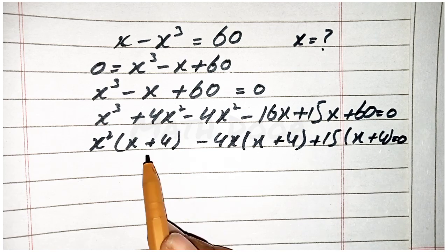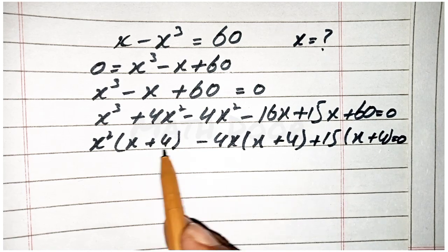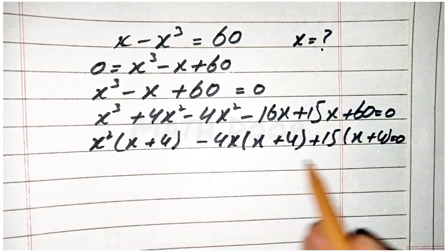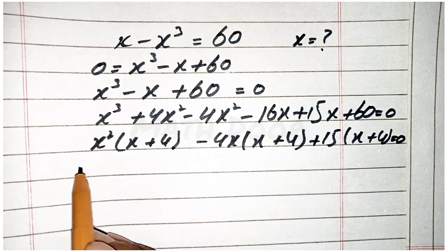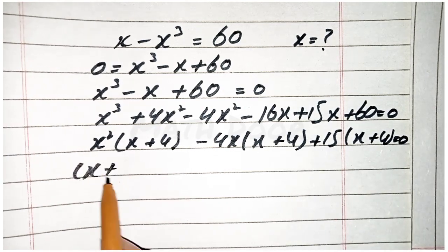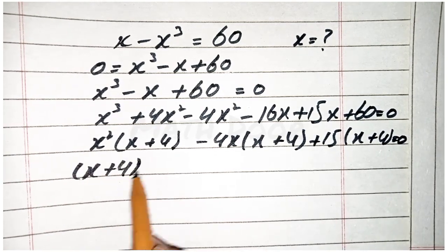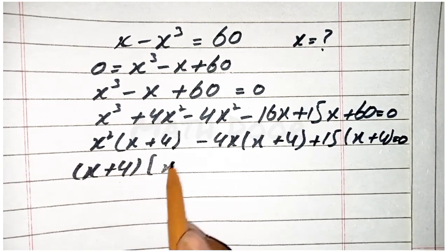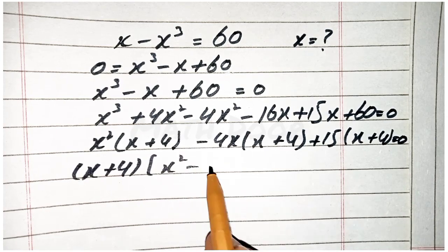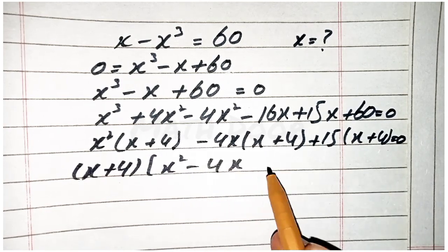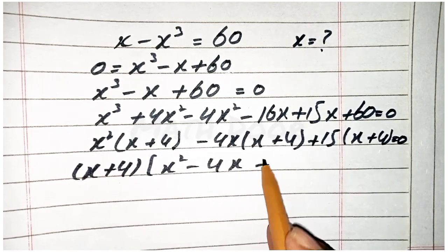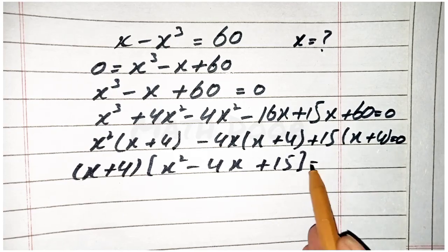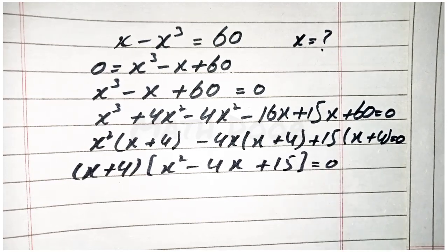Now we take (x plus 4) as a common factor from these terms. This becomes (x plus 4) times (x squared minus 4x plus 15) is equal to 0.